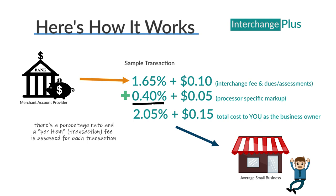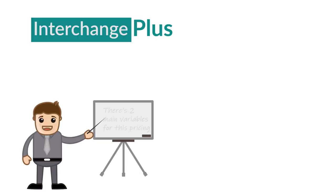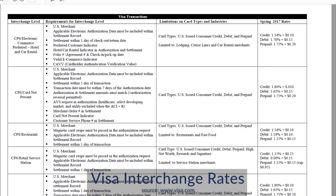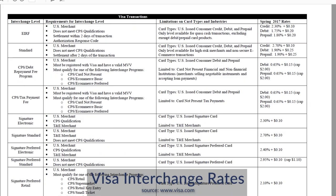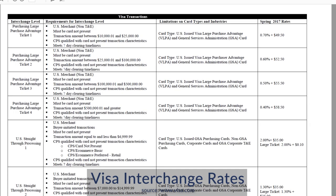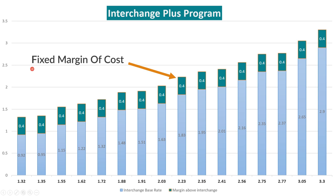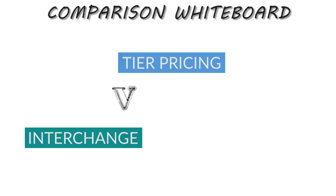Those additional costs include administration fees, software and technology license fees, customer service, fraud, and other risk factors. There are two main variables within interchange plus pricing: the percentage margin above interchange and the per-item fee above the interchange cost. Both are applied every time a transaction takes place.